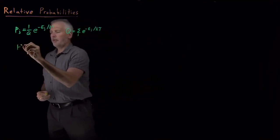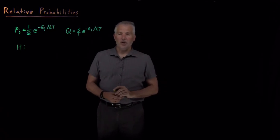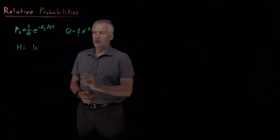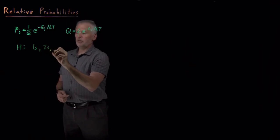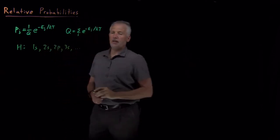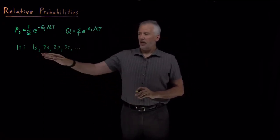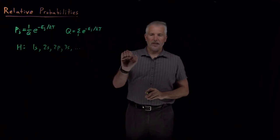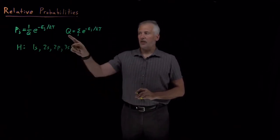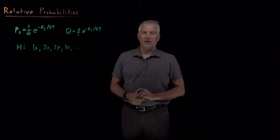But think about what happens with a system like a hydrogen atom, where the electron might be in the 1s orbital, the 2s orbital, the 2p, the 3s, 3p, 3d, or the 4s, 4p, 4d, 4f, and so on. There's an infinite number of states — I can never run out of states to name. In order to calculate Q, I need to know the energies of this infinite list of states.